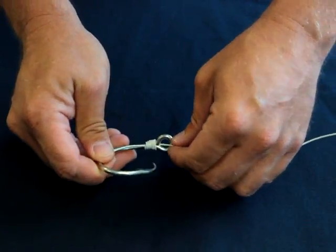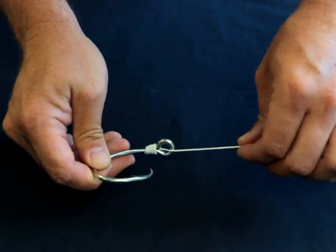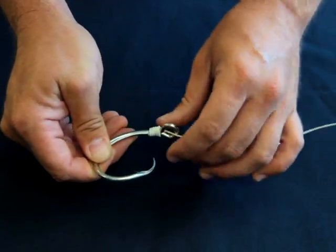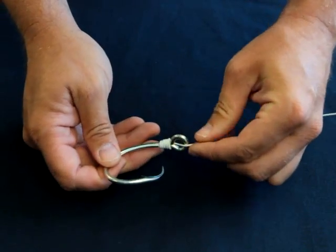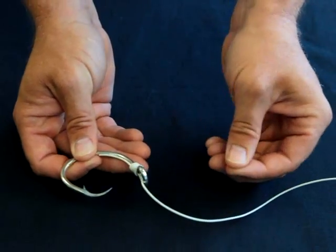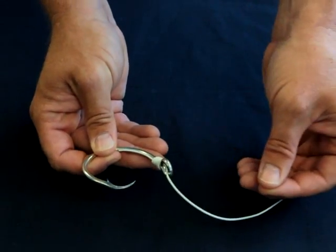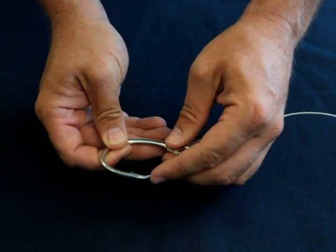One point to note: the line should actually come this way out of the circle hook. It improves your hook setting. If it comes out the bottom, the actual eye of the hook will get in the way of the point.